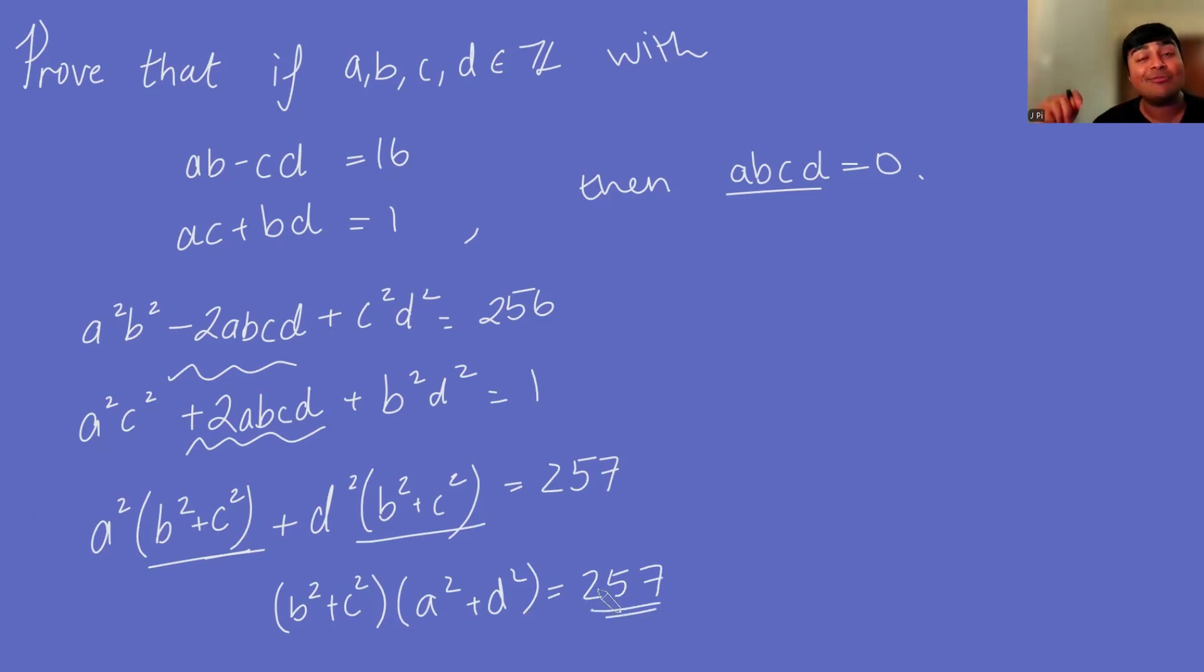But the interesting thing here is 257 is a prime number, and since a, b, c, and d are integers, these guys will be integers. And so the only way that this is possible is if one of these numbers is 1 and one is 257, because quite clearly each of these brackets are positive. So I don't have to worry about minus 1 and minus 257. So one of these brackets has to be 1.